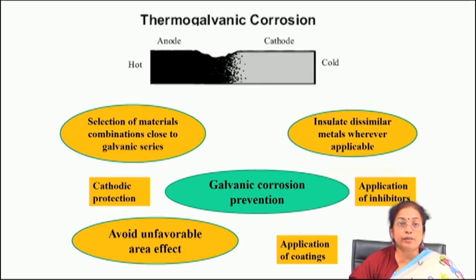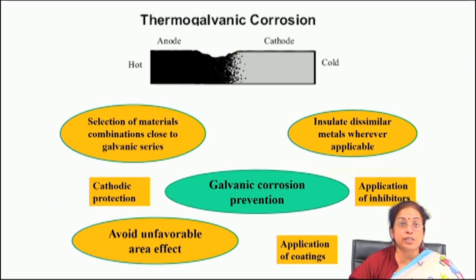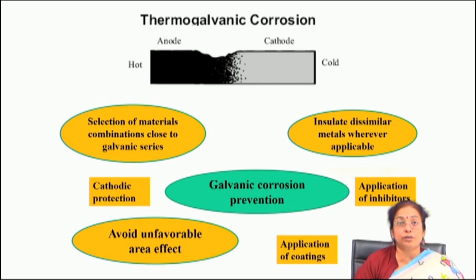Corrosion rate depends on current density. If you have a very large anode area compared to the cathode area, the current density will be much lower, and as a result the degree of corrosion will be reduced at the anode. A very large anode-to-cathode ratio reduces the probability and overall corrosion rate at the anode, compared to a case where you have a very small anode-to-cathode area ratio.